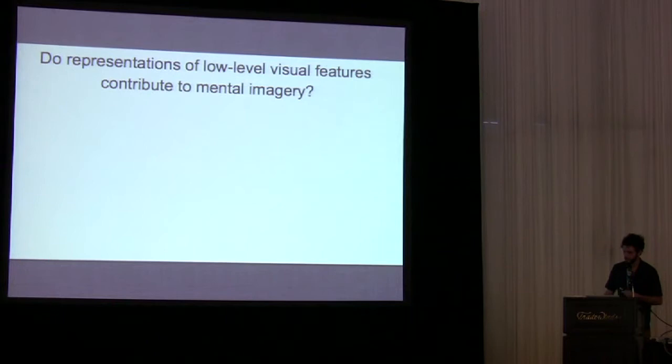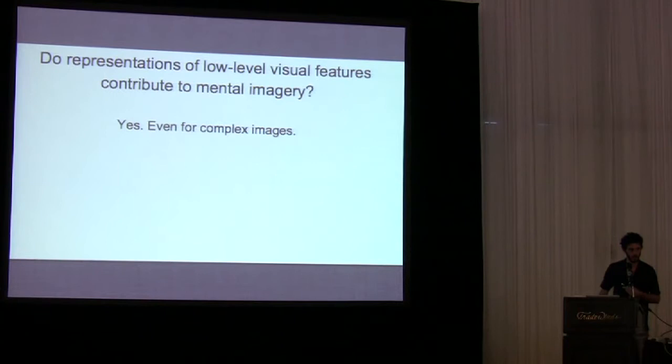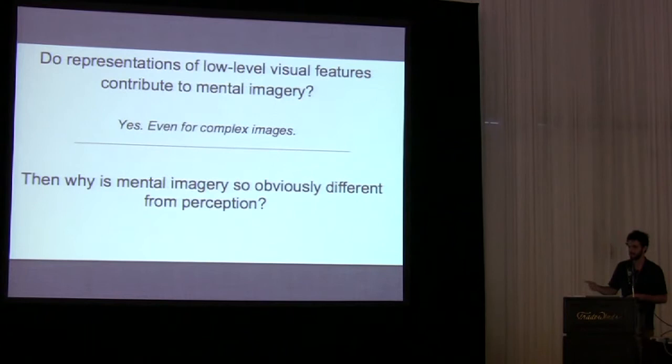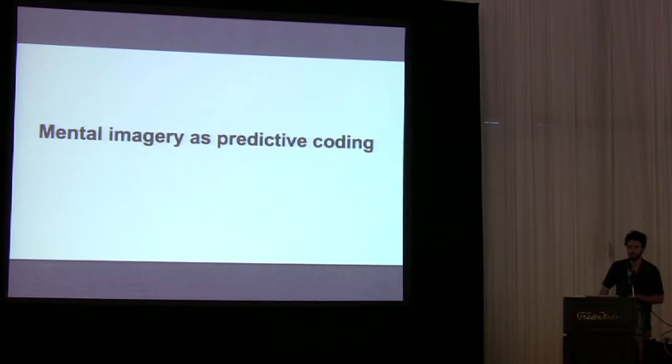This result really answers our question in the affirmative: representations of low-level visual features do contribute to mental imagery, even for complex images. That leads to an obvious question — why is mental imagery so obviously different from perception? The decoding accuracy is worse, and our mental images are easy — at least for sane people — to discriminate from external images. I think we can begin to get an answer by considering mental imagery as a component of predictive coding.